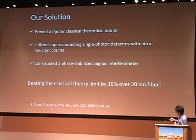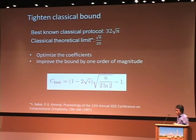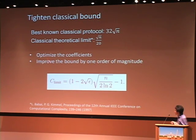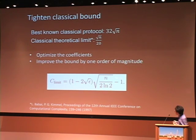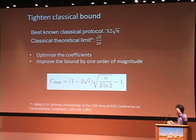Let me talk about our contributions in more detail. We went back to look at the theory proof carefully. What we found is that people only focused on the scaling behavior of the bound — they did not carefully optimize the coefficients. We carefully optimized the coefficients, and it turns out we can have a much better bound. The key idea is we can improve the bound by about one order of magnitude, narrowing the gap from three orders of magnitude to two orders of magnitude.